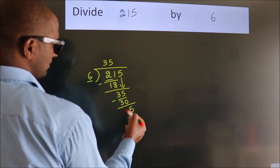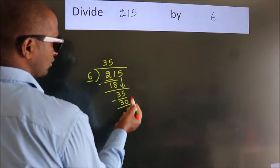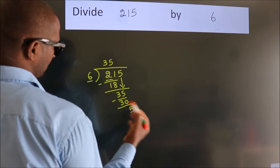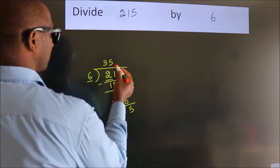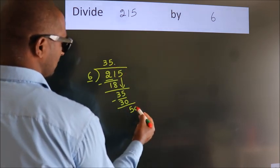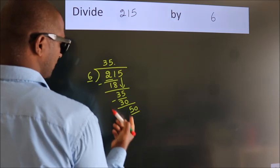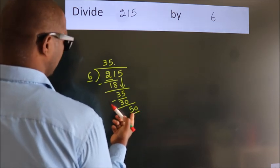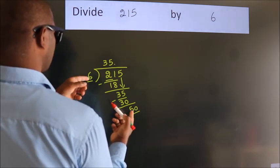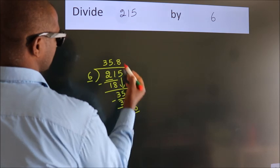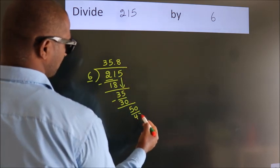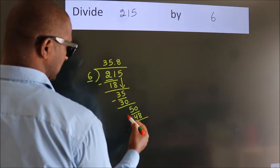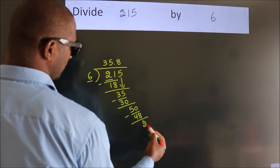After this, no more numbers to bring it down. So what we do is, we put dot take 0. So 50. A number close to 50 in 6 table is 6, 8, 48. Now we subtract. We get 2.